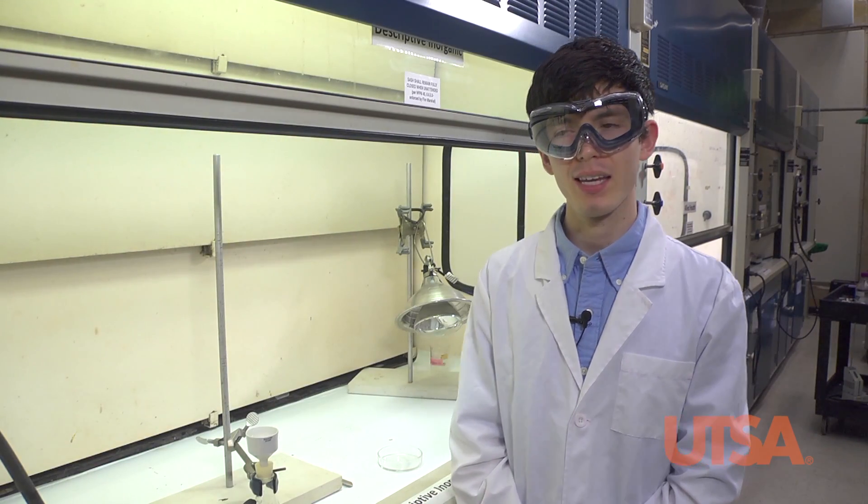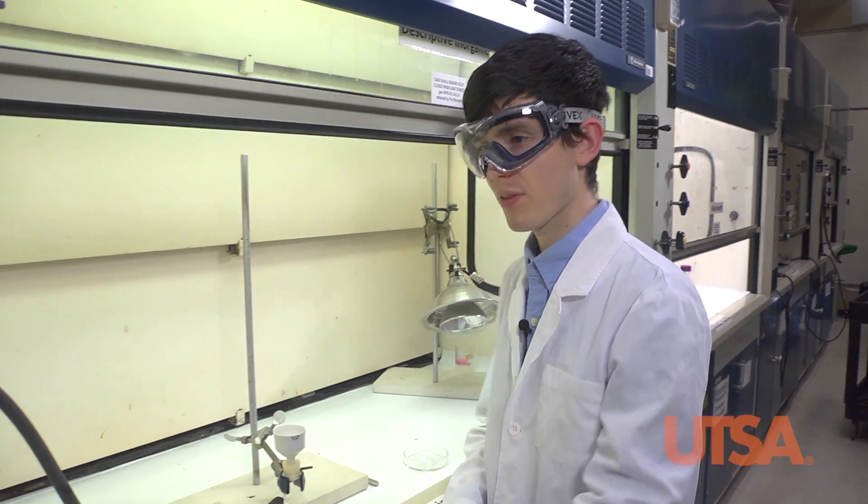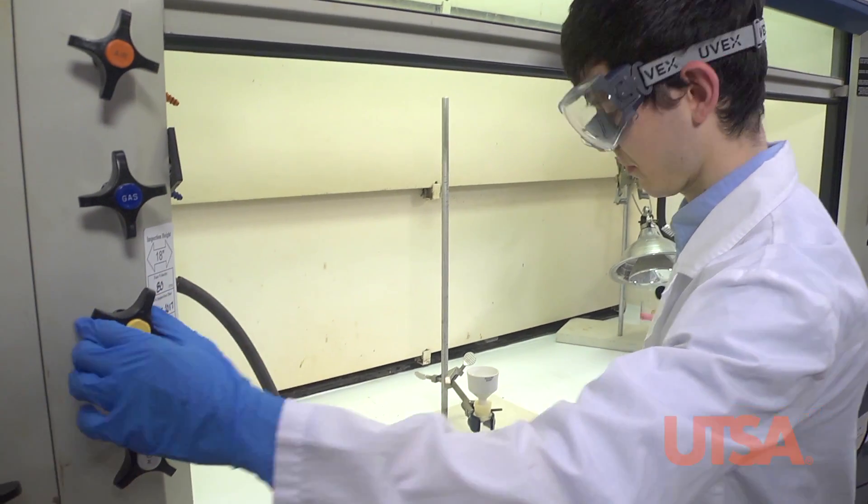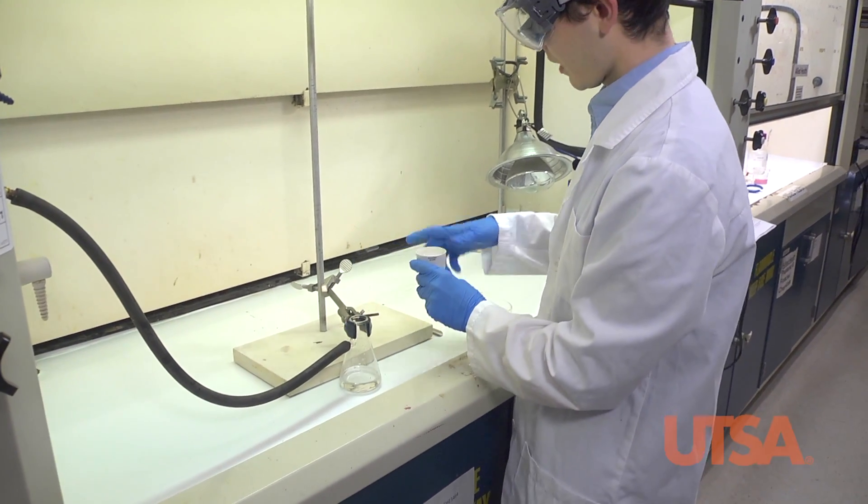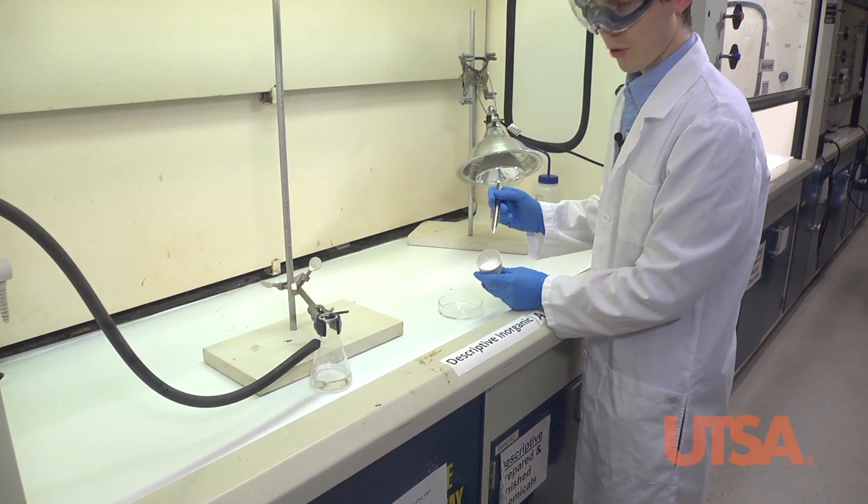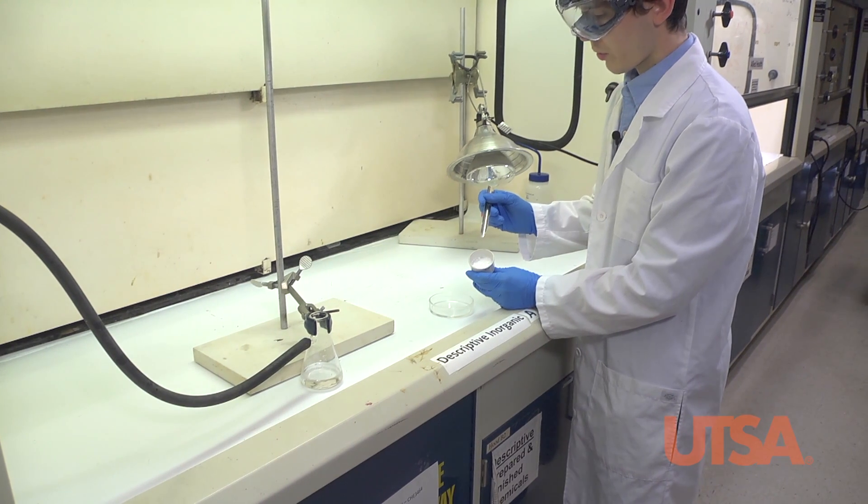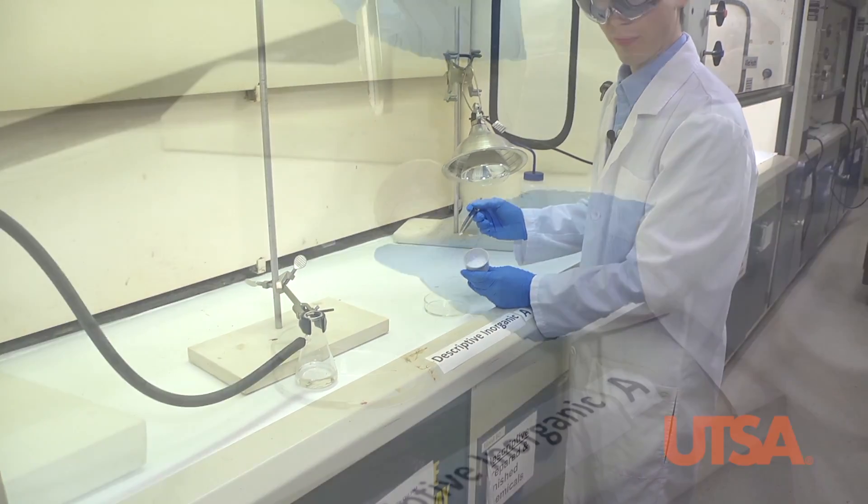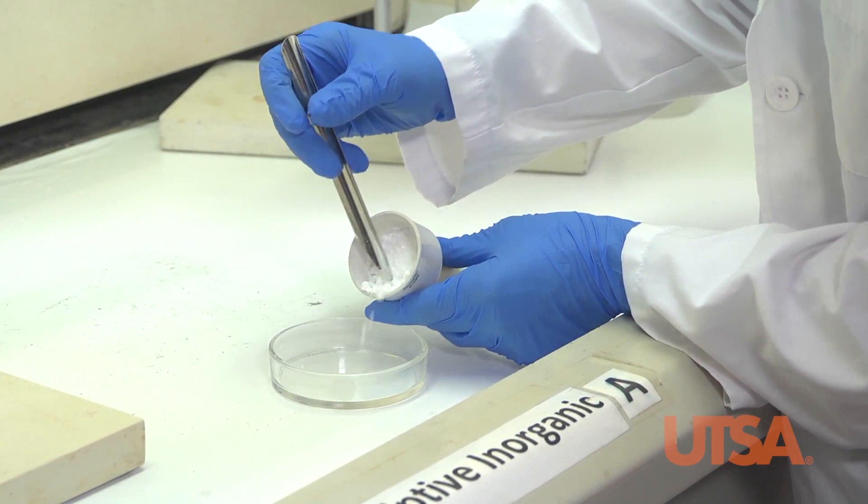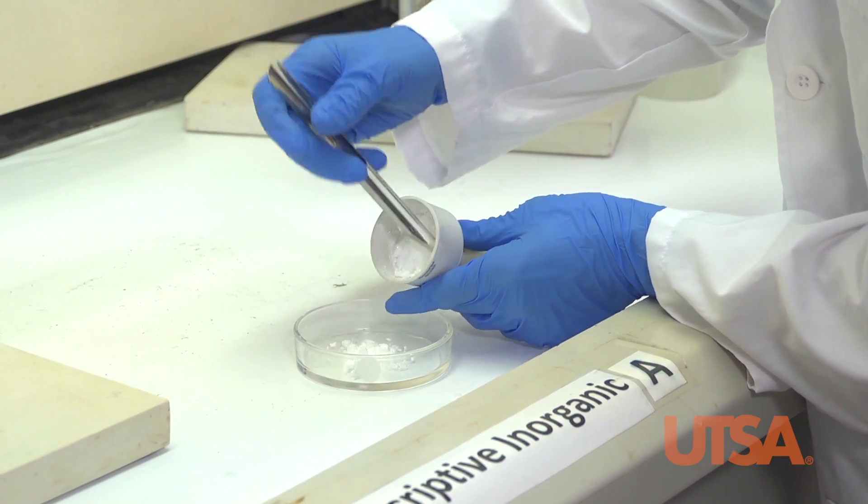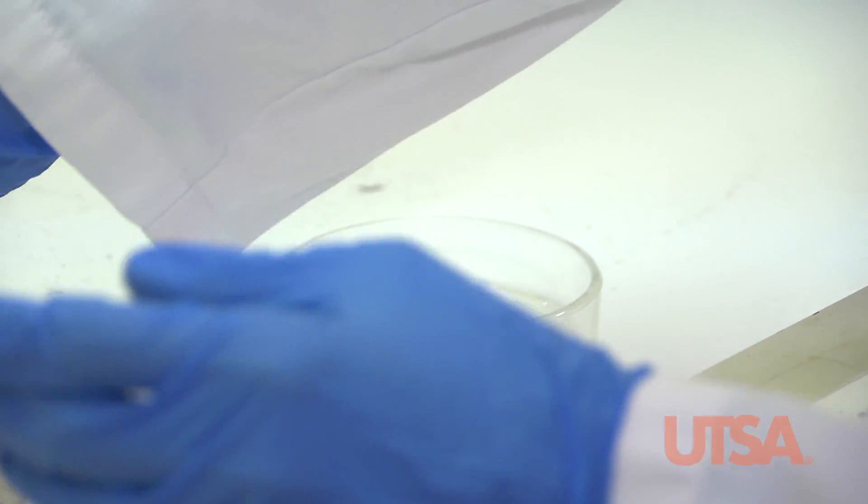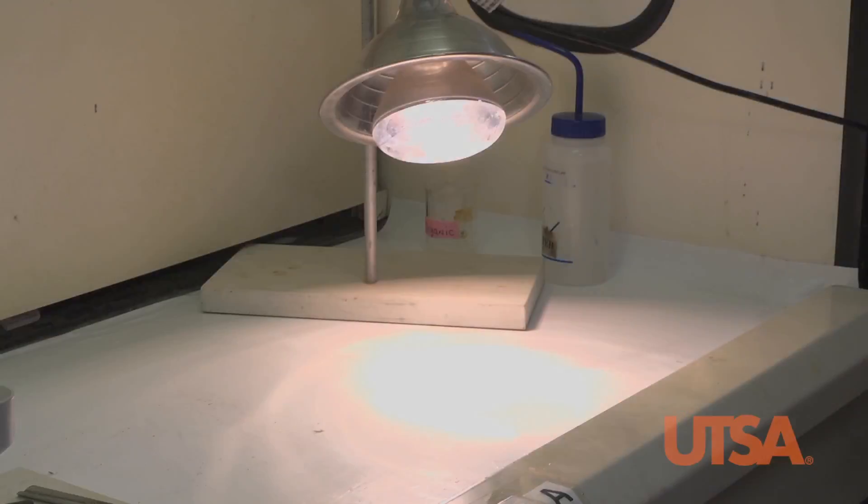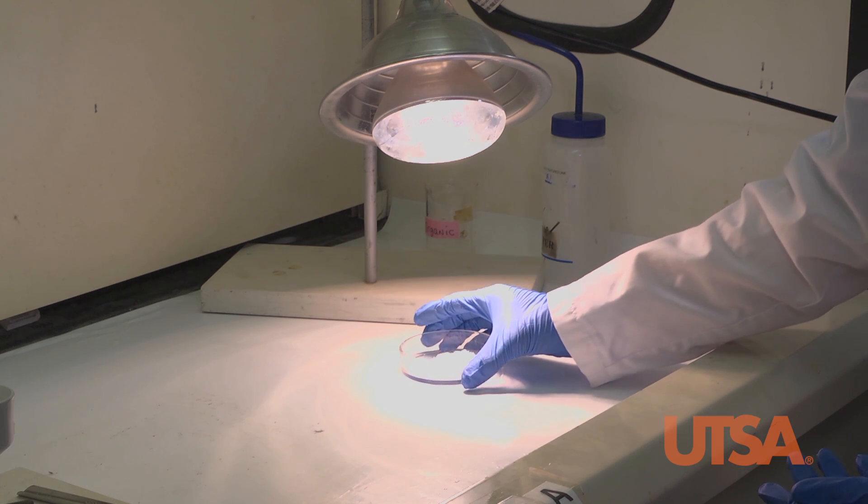Now we will dry the crystals beneath the heat lamp. First, turn off the vacuum, remove the funnel, and use a spatula to scrape the crystals onto a watch glass or dish. Let the crystals dry beneath the heat lamp.